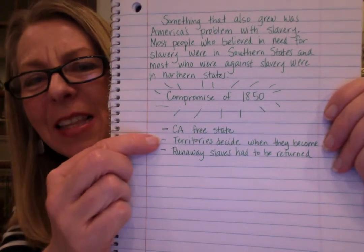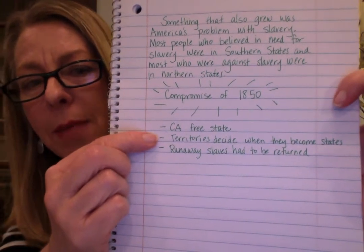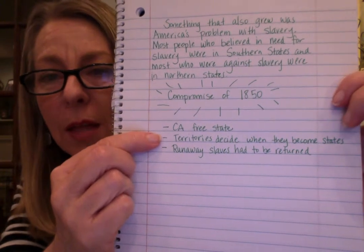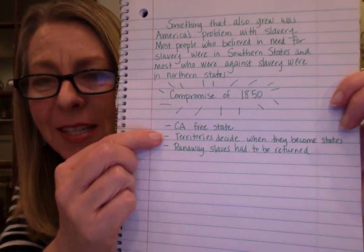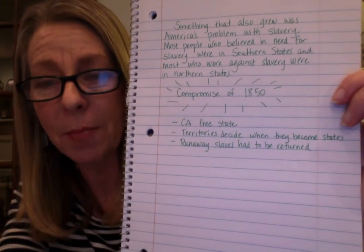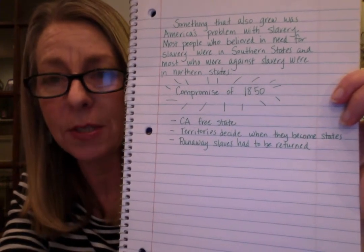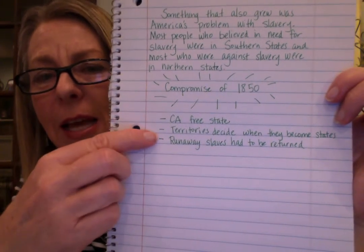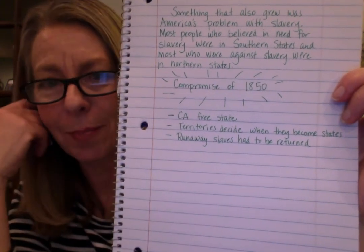Next, the territories could decide when they became states. Territories of the United States that were not states yet — when they got enough people and were ready to become a state — they would be allowed to vote whether they were free or slave. And that didn't make the slave states very happy.